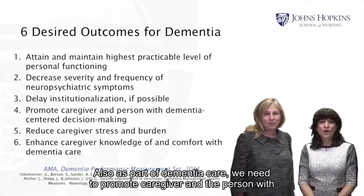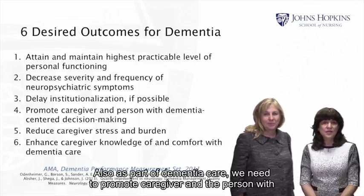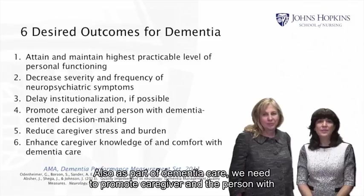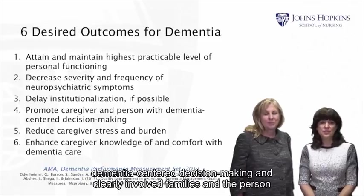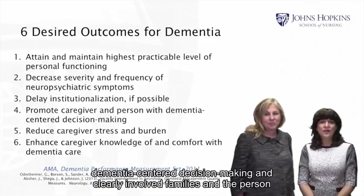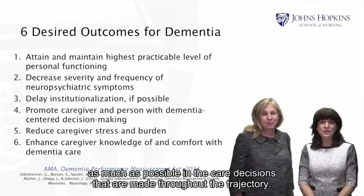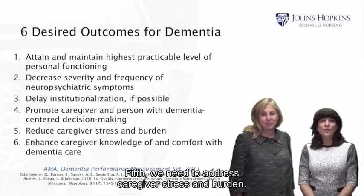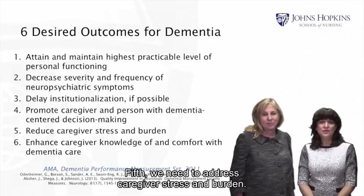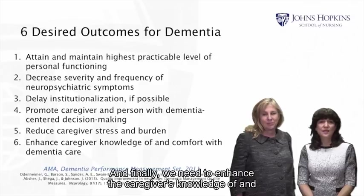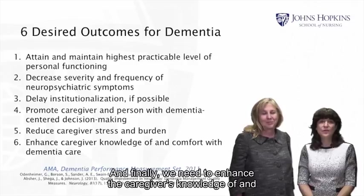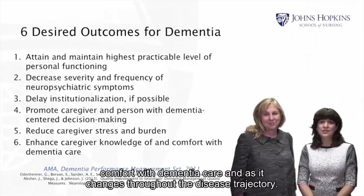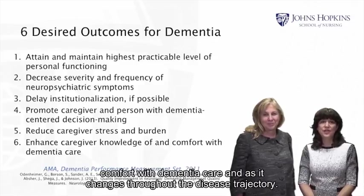We need to delay institutionalization if possible and keep people in the residence of their choice. As part of dementia care, we need to promote caregiver and person-with-dementia centered decision making, and clearly involve families and the person as much as possible in care decisions throughout the trajectory. Fifth, we need to address caregiver stress and burden. And finally, we need to enhance the caregiver's knowledge of and comfort with dementia care as it changes throughout the disease trajectory.